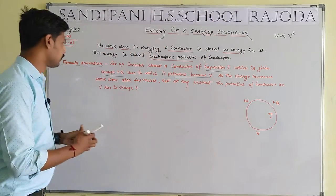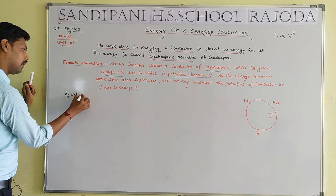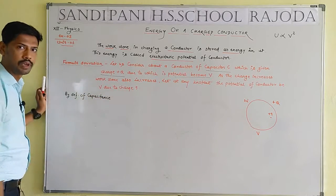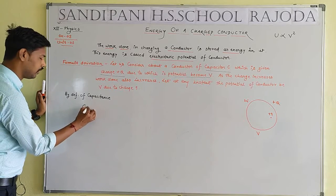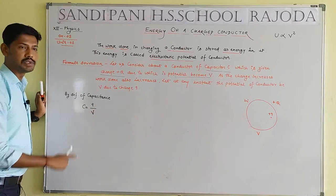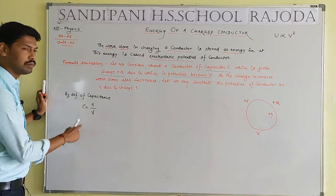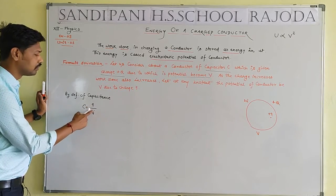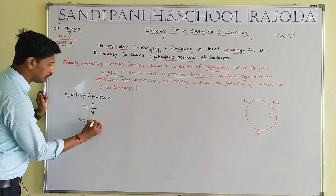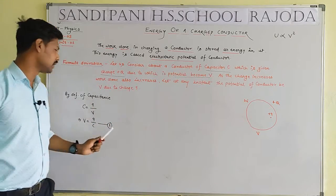By definition of capacitance: C will be equal to Q by V. Here C is capacitance, Q is the amount of charge, and V is the potential. We need to find the value of V: V equals Q by C — this is Equation Number 1.